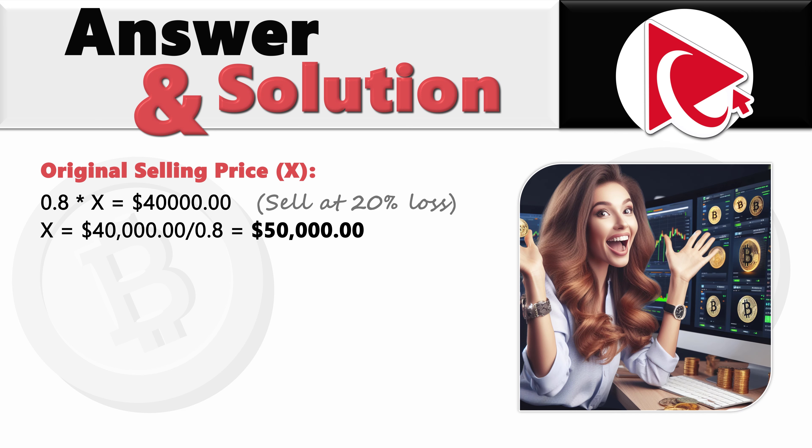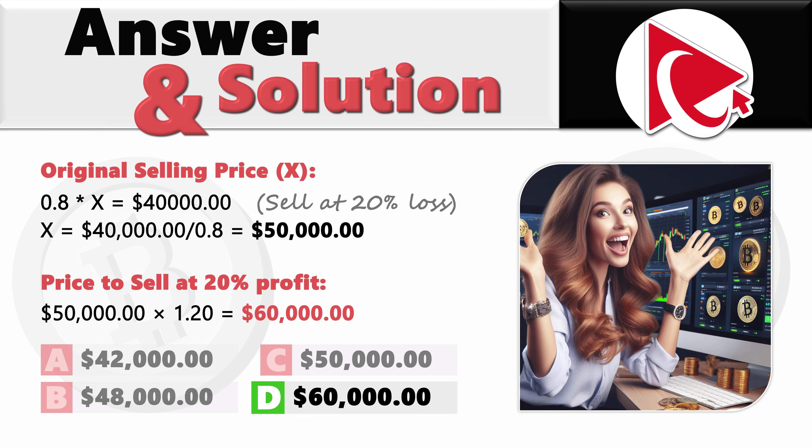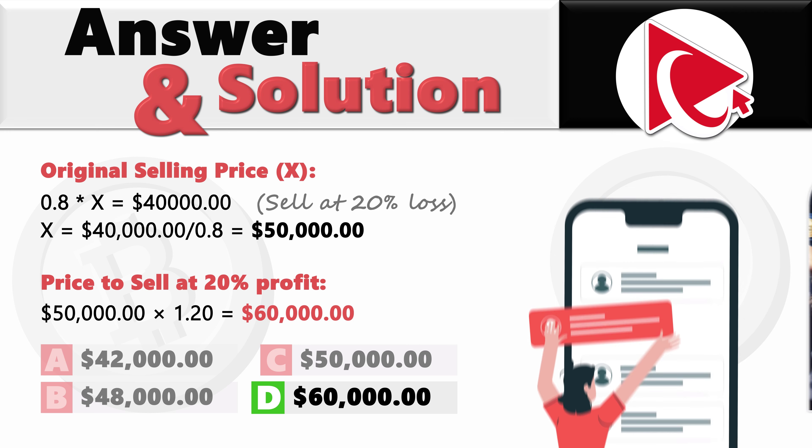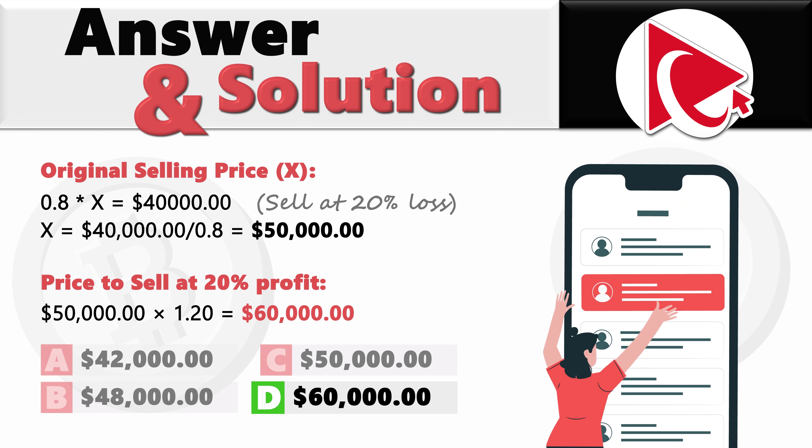This is the original selling price. Now it's time to define a 20% profit price. $50,000 multiplied by 1.2 equals $60,000. So the correct answer here is choice D, $60,000. Did answer surprise you? Please share your thoughts, ideas, and suggestions in comments.